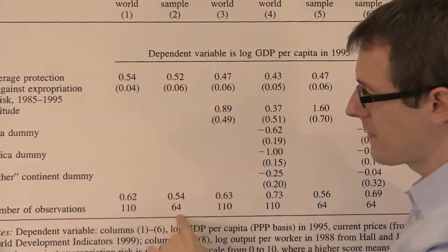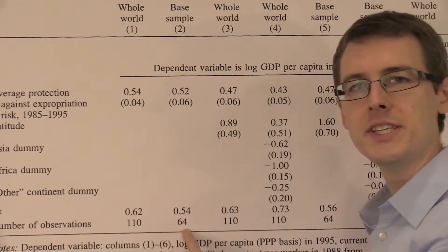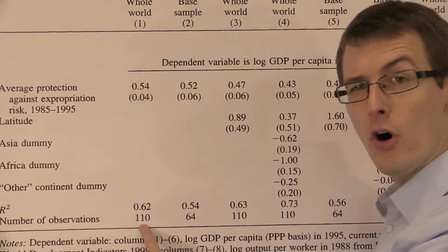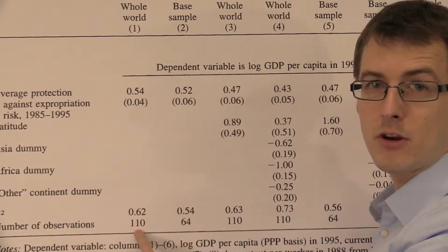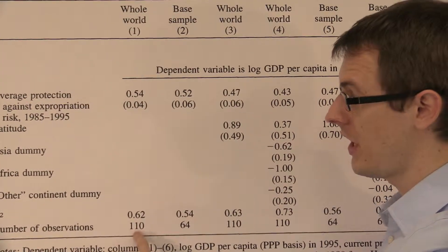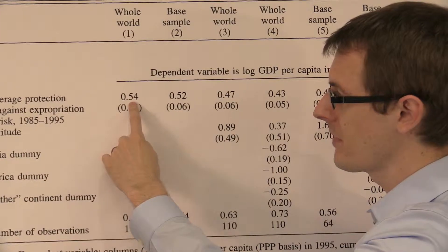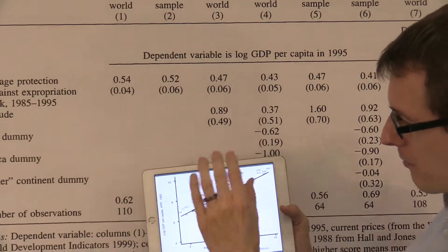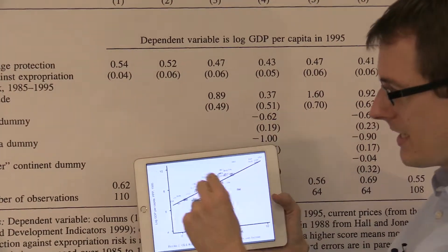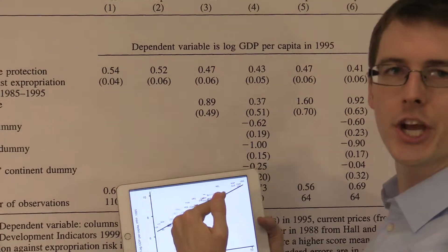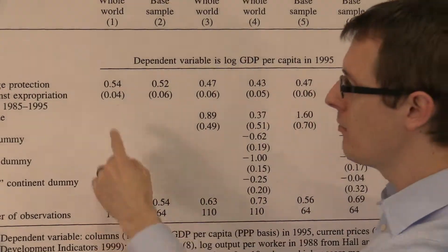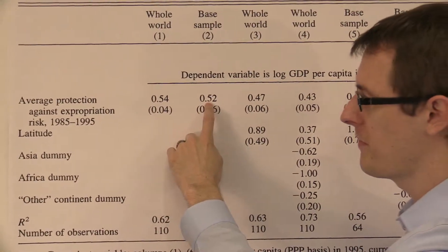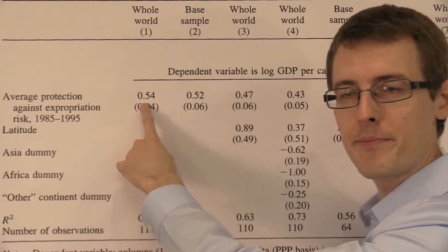In this specification, we're only using 64 countries in the world. If you use almost all the countries — 110 — we're going to get a slightly different line. We've put more dots in here with more countries, so the line changes a little bit, but it only changes from a slope of 0.52 to 0.54.